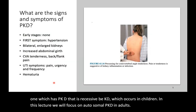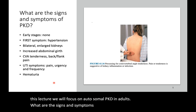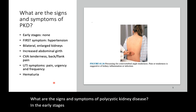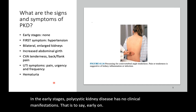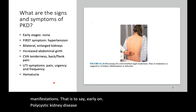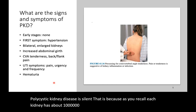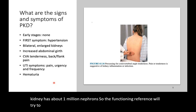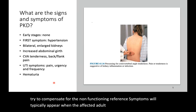In this lecture, we will focus on autosomal PKD in adults. In the early stages, polycystic kidney disease has no clinical manifestations — early on, it is silent. That is because each kidney has about 1 million nephrons, so the functioning nephrons will try to compensate for the non-functioning nephrons. Symptoms will typically appear when the affected adult is between 30 to 50 years old.